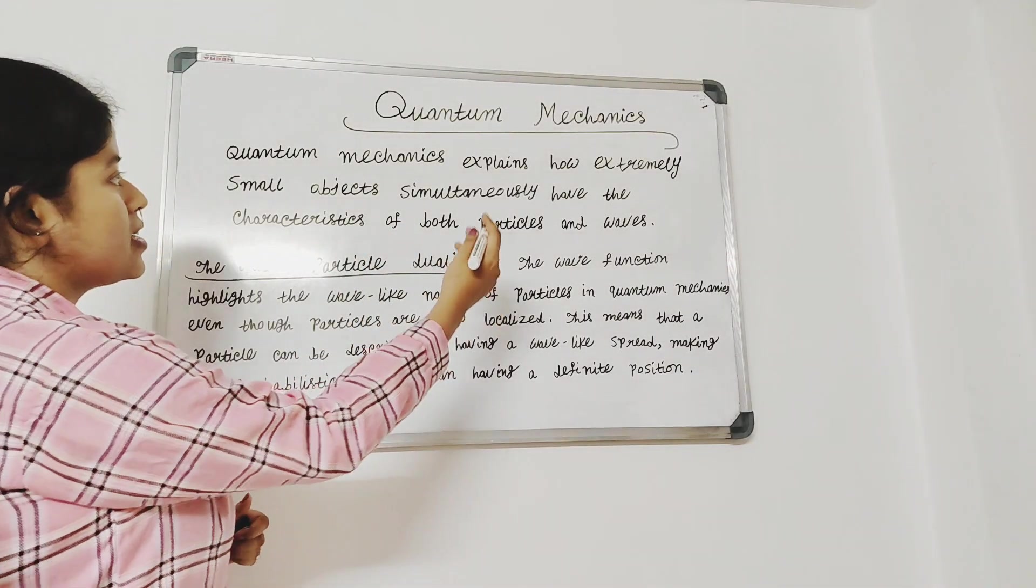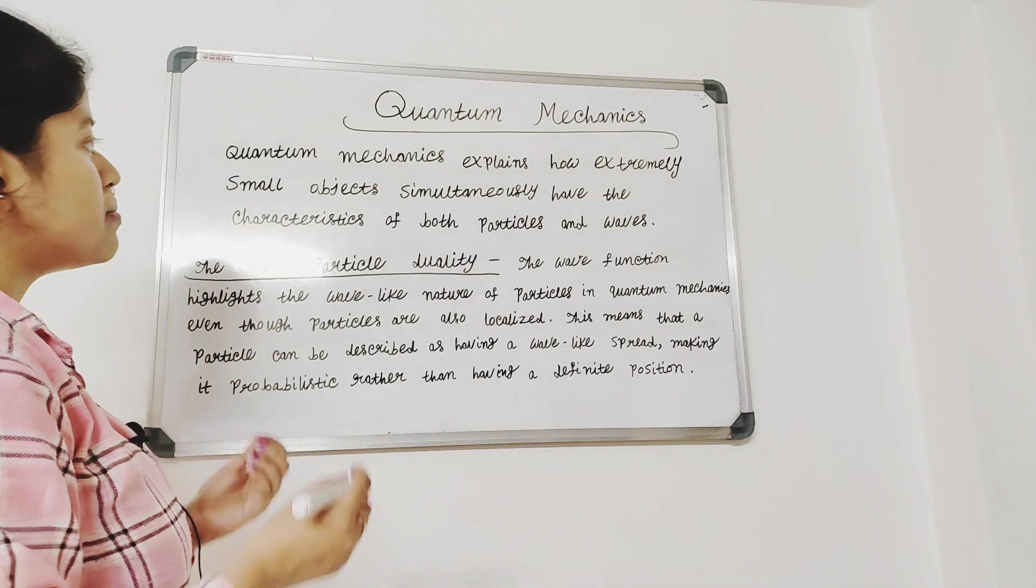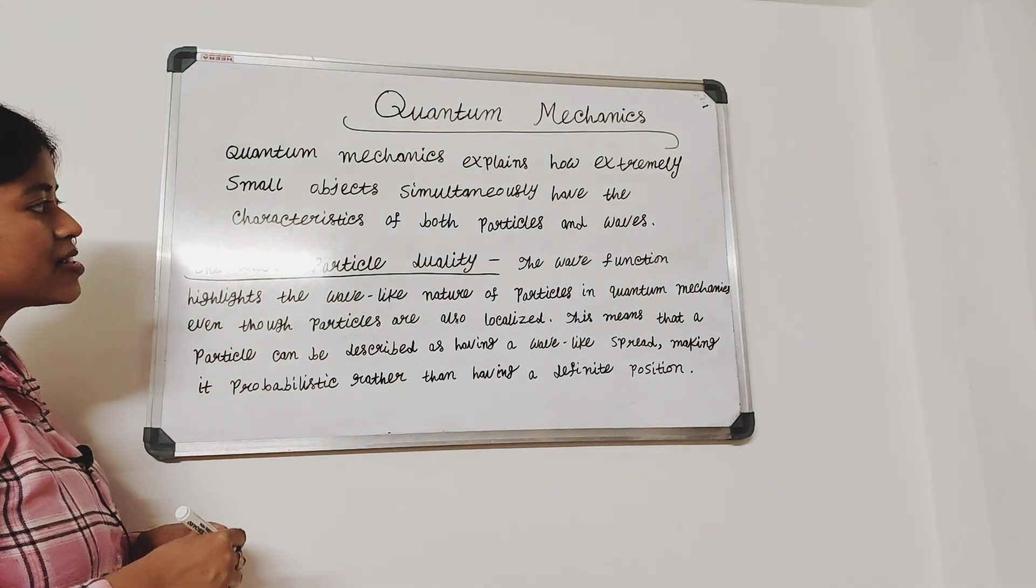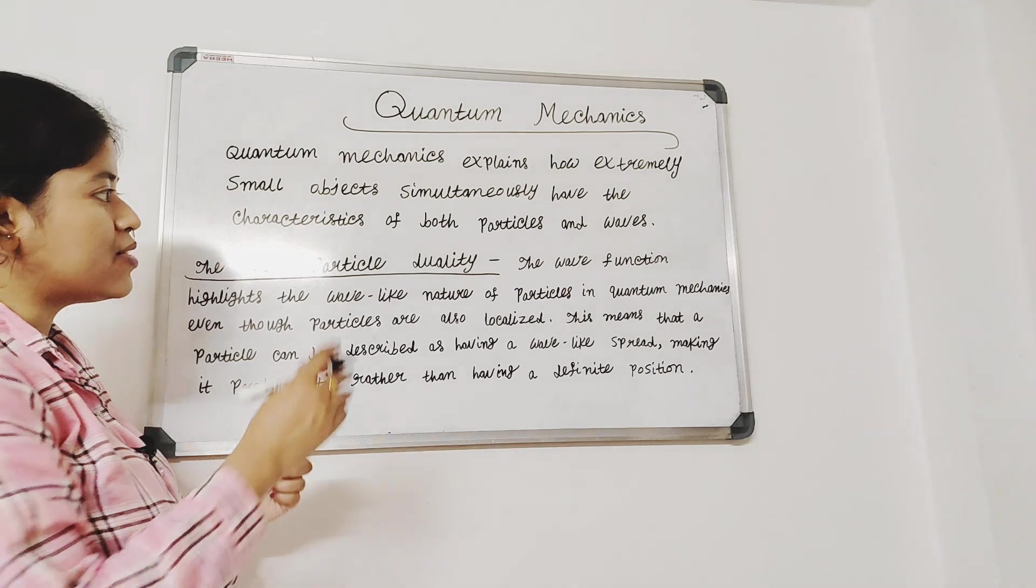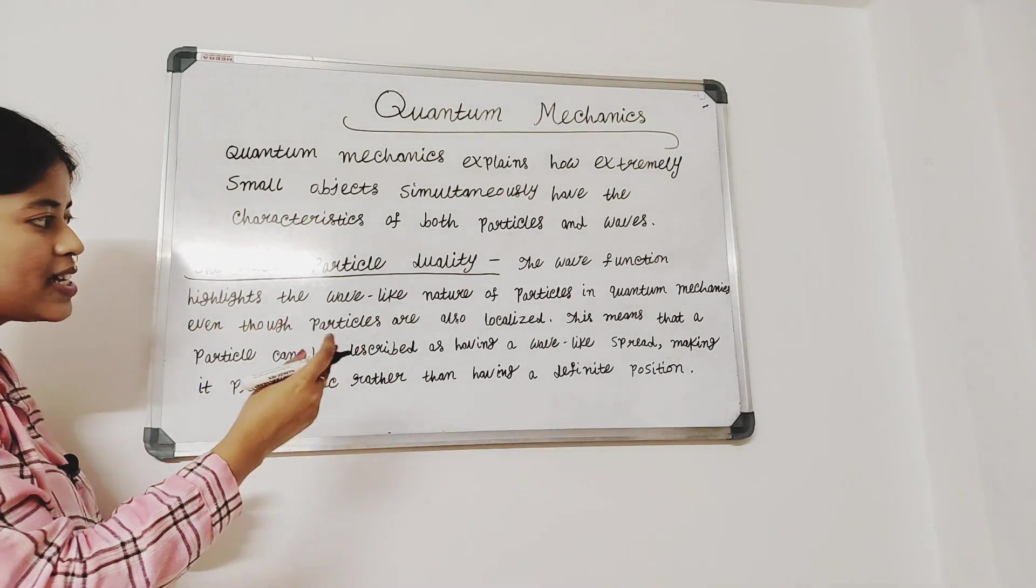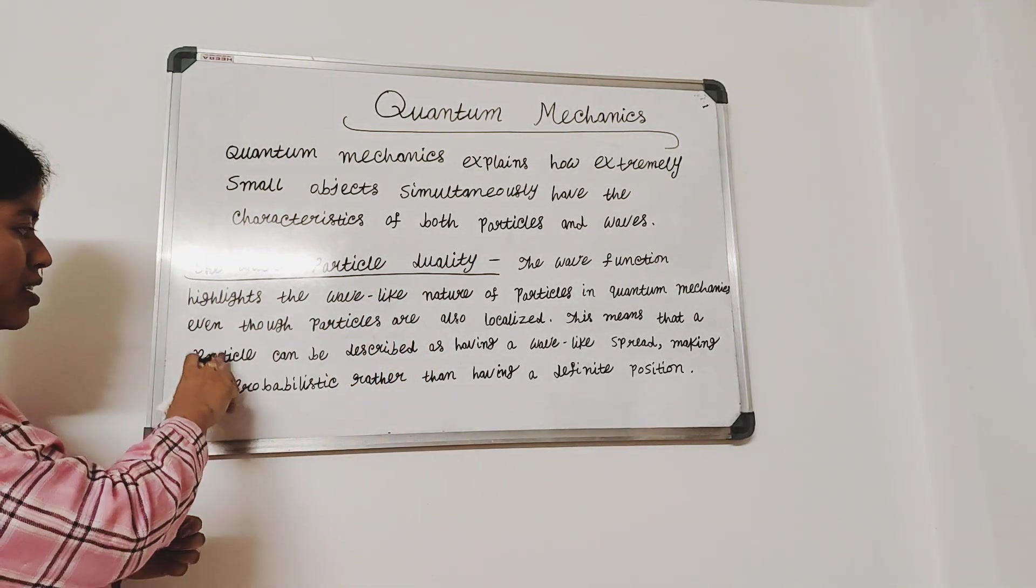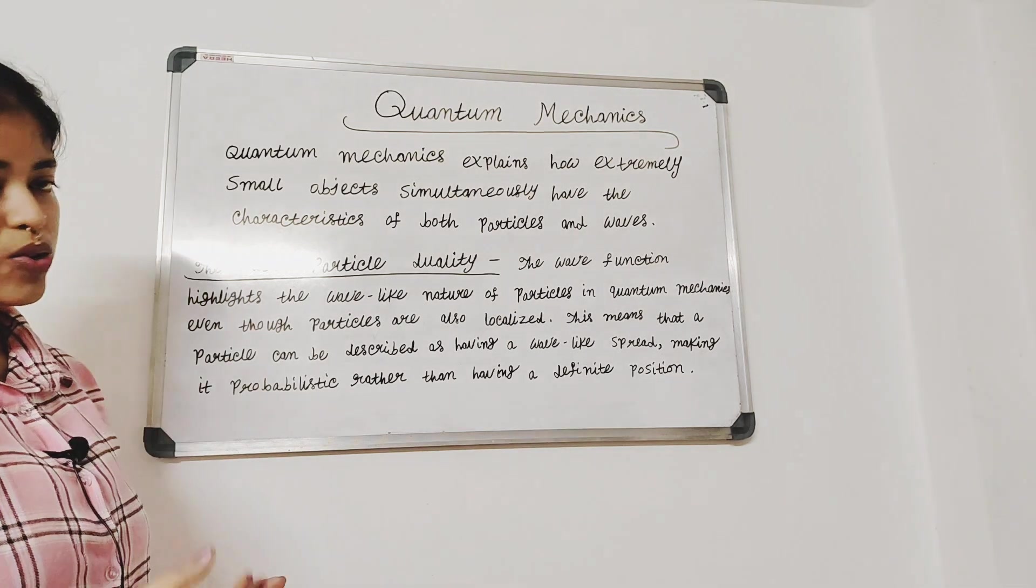Quantum mechanics explains how extremely small objects simultaneously have the characteristics of both particles and waves. The wave-particle duality, the wave function highlights the wave-like nature of particles in quantum mechanics even though particles are also localized.